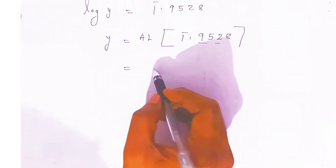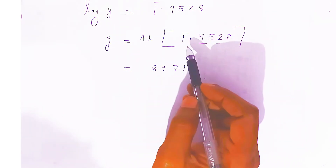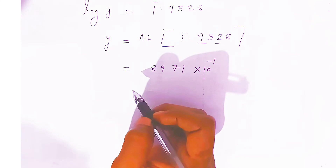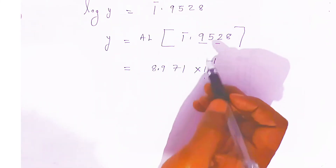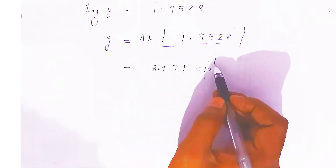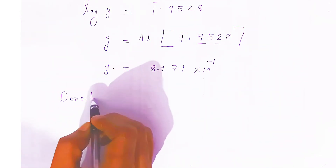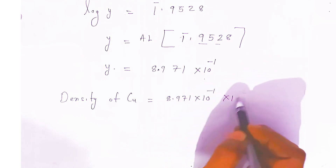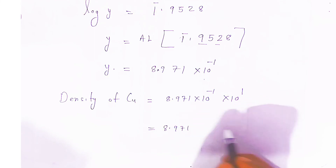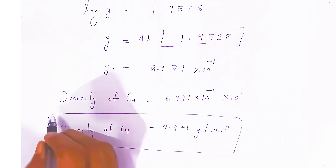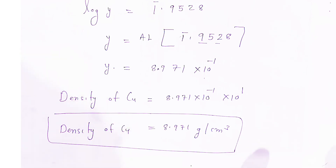In the antilog table, see 95 in second column and 8 as the difference — you get 8971. The characteristic is 1 bar (one minus one = 0), so put the decimal here: 8.971×10⁻¹. This is the value of y. So density of copper = y × 10¹ = 8.971×10⁻¹ × 10¹, which gives 8.971 gram per centimeter cube. This is the answer. In examination, this is the format of writing the answer — you will get full marks. If you like my video, please share it, subscribe. Thank you very much, have a nice day, God bless you.